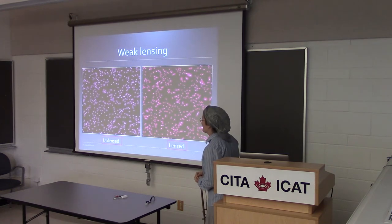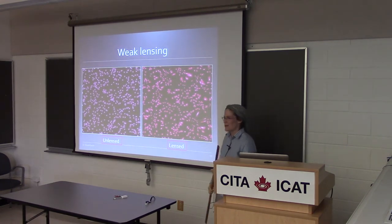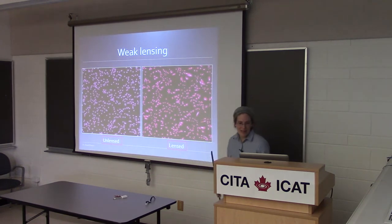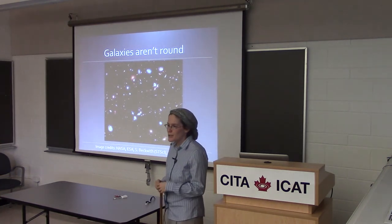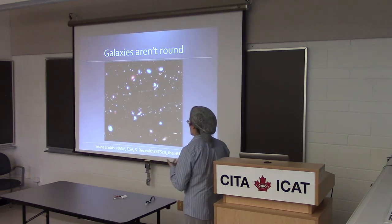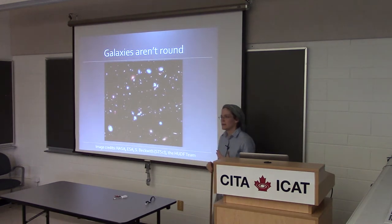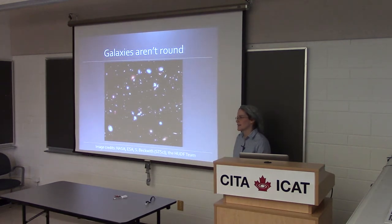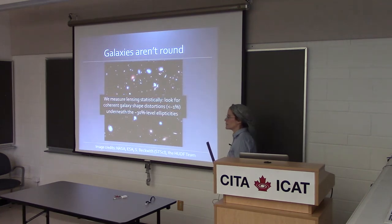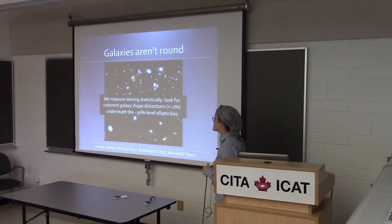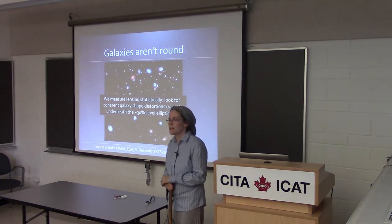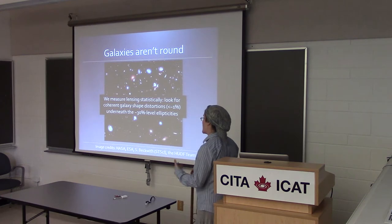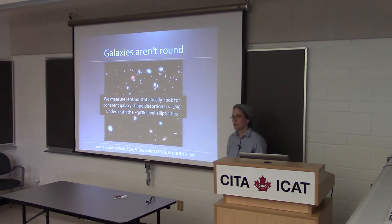The complication, of course, is that real galaxies aren't round. Galaxies have some non-negligible intrinsic ellipticity and nearly random orientations, and the coherent distortions induced by lensing are superimposed on top of that pattern. The way we measure lensing is statistical — we're measuring coherent galaxy-shape distortions underneath these 30% level random ellipticities. The random component of the ellipticity averages down if you average over enough objects, whereas a coherent lensing-induced distortion will not average down, and eventually we'll be able to measure it if we have a lot of galaxies.